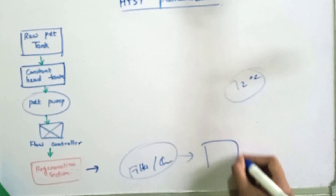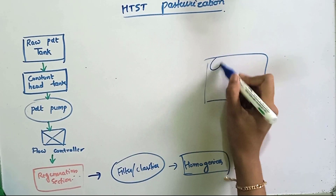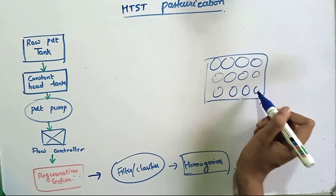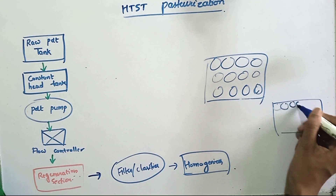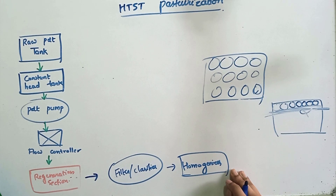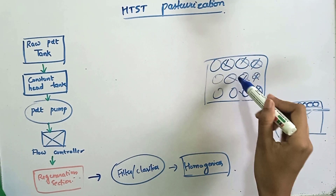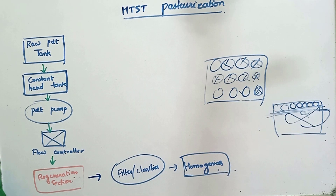From the filter or clarifier, the milk reaches a homogenizer. Milk consists of a number of fat globules — fat exists as globules in milk. When kept for some time, these fat globules accumulate at the top of the milk, forming a layer that is not appealing. Homogenization is the process of breaking down these fat globules. By reducing their size, we can prevent their accumulation at the top of the milk. That is why homogenization is done.